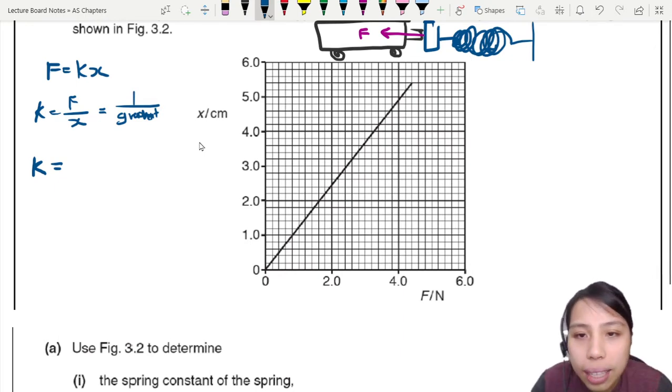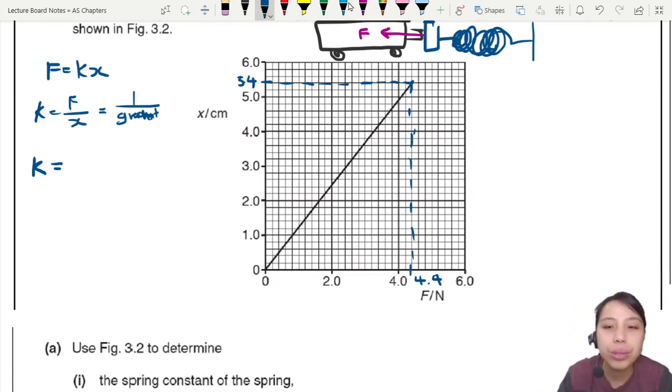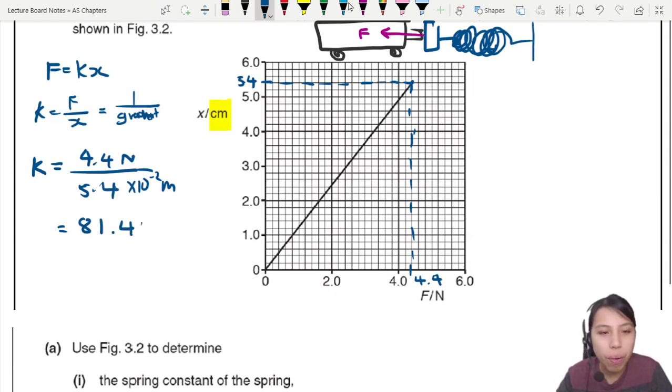It doesn't matter if you take the gradient or just a point. I'll pick the point right up there. The horizontal will be 5.4 and the vertical line goes to 4.4. The force is 4.4 newtons and the extension is 5.4 cm, which is 5.4 × 10^-2 meters. When you do that, we should get about 81.481.